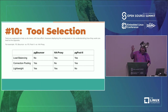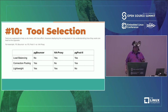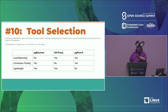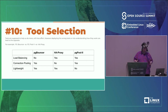Number 10: Tool selection. How many people here are running Postgres? Are you using pgbouncer, HAProxy, or pgpool? They all do something very similar and you can overlap these. Understanding the differences between tools like this is incredibly important because you can deploy one and not get the benefit. If you're trying to understand whether you need load balancing versus connection pooling versus HA, you might need different components.